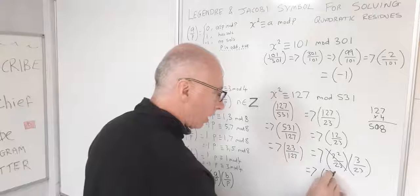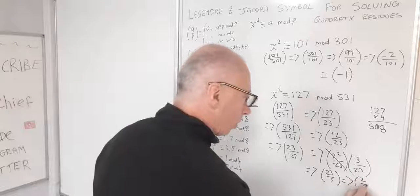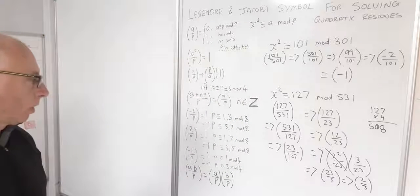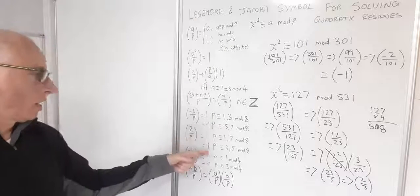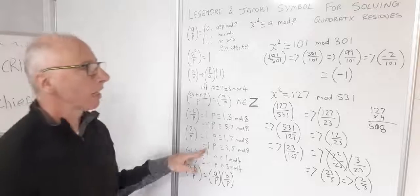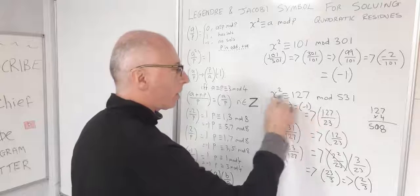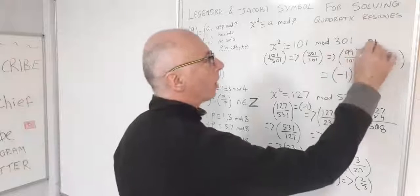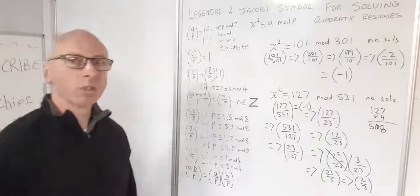Now on to (23/3): subtracting a multiple of 3 from 23 gives me (2/3). With 2 in the top, I use the rule for (2/p): 3 is congruent with 3 mod 8, so the answer is −1. This one is therefore −1, meaning this congruence has no solution. So both problems have no solutions.